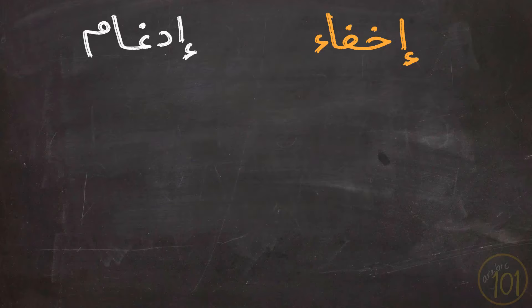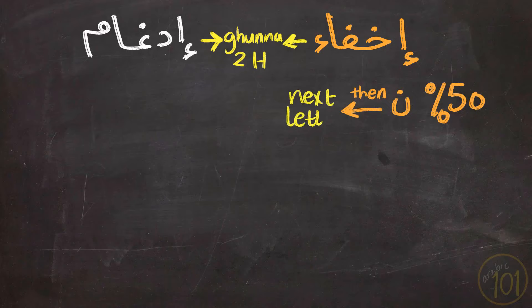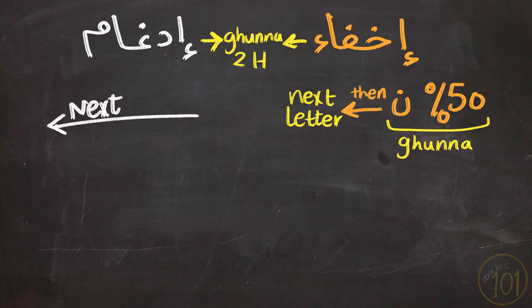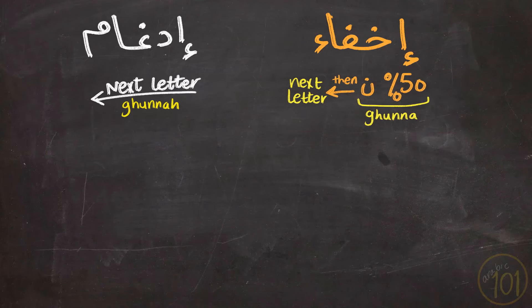The answer is simple. Yes, they both have Ghunna for two Harekat, but with Ikhfa you pronounce half of the Noon — only its Ghunna for two Harekat — and after that you pronounce the next letter. While with Idgham, you don't pronounce the Noon at all; you start pronouncing the following letter directly instead of the Noon Sakinah, with a Ghunna of two Harekat. Let's compare two examples.